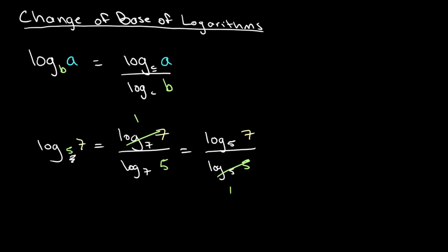Another neat thing we can do with this is take both sides in terms of Lg. So we can write Lg of 7 divided by Lg of 5. In this case, we're essentially changing the log to base 10, and we know that log base 10 is equal to Lg, so we're just writing it as such.